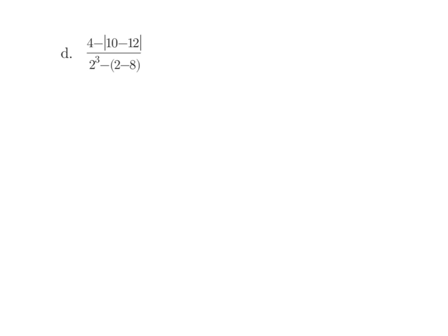Last one — we want to start by simplifying inside parentheses and absolute values. So we get 4 minus the absolute value of negative 2. On the bottom we get 2 minus the absolute value of negative 2, which is 2. Let's go ahead and calculate our exponent steps — this includes the absolute value. Absolute value of negative 2 is 2. On the bottom we get 2 cubed is 8 — that's 2 times 2 times 2. I'm also going to change my minus and negative to a plus 6.